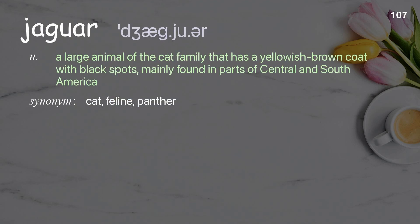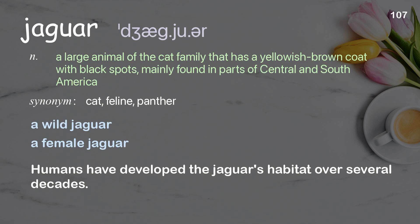Jaguar: a large animal of the cat family that has a yellowish-brown coat with black spots, mainly found in parts of Central and South America. Examples: a wild jaguar; a female jaguar. Humans have developed the jaguar's habitat over several decades.